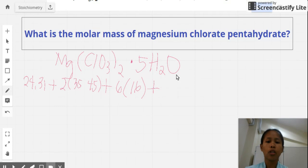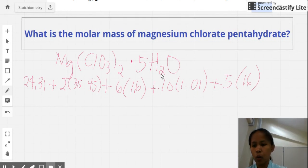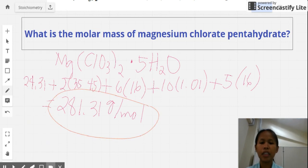So that's gonna be 10 for hydrogen times 1.01. Plus, you have 5 oxygen, so that's gonna be 5 times 16. Inputting everything to the calculator will give you 281.31 grams per mole. So this is now the molar mass of your magnesium chlorate pentahydrate.